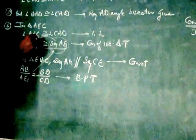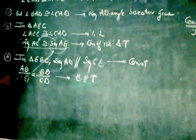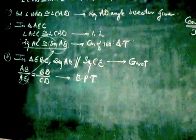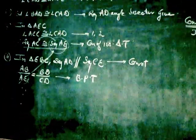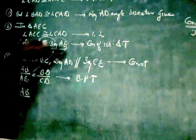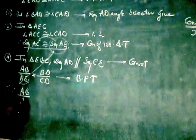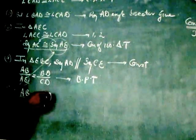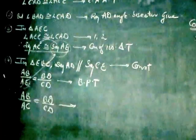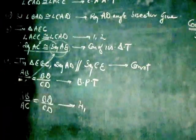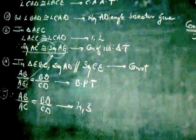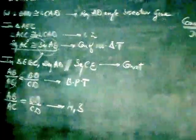So instead of writing AE we can replace it by AC. So I get point number 5: Therefore AB upon, instead of AE I am substituting it by AC, is equal to, this is as it is, BD upon CD. This I get from point number 4. I am substituting the value from point number 3. Hence it is proved.